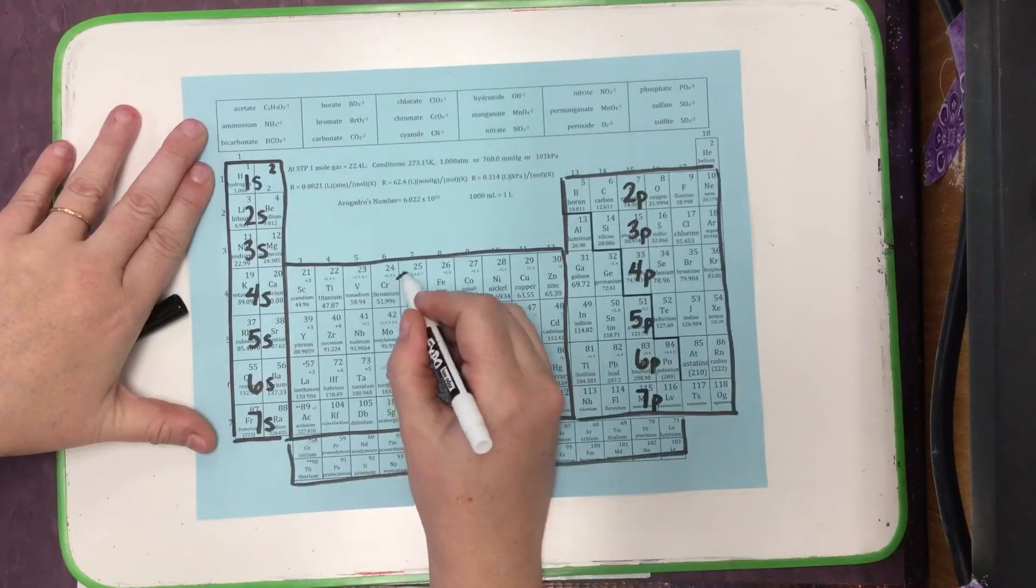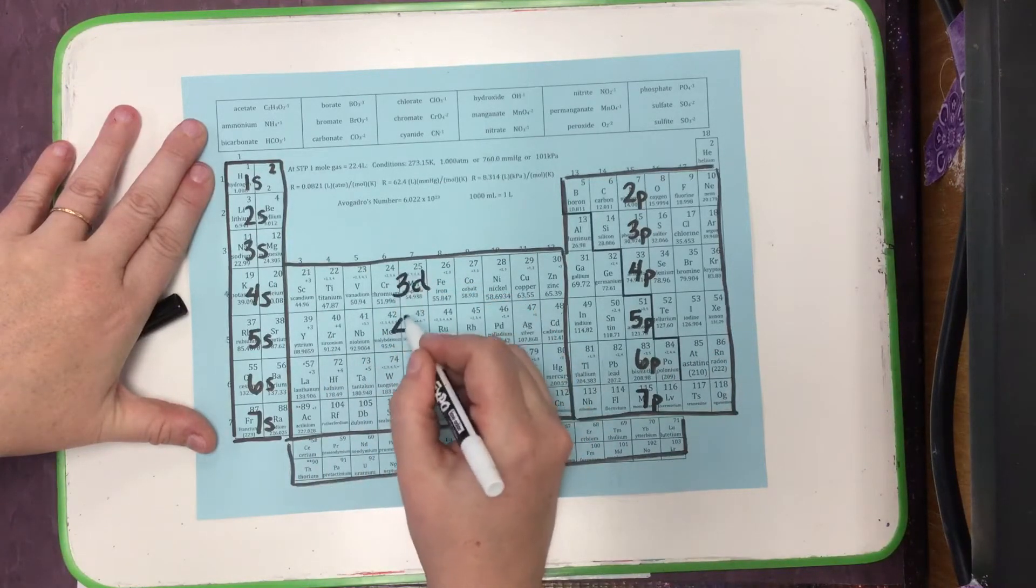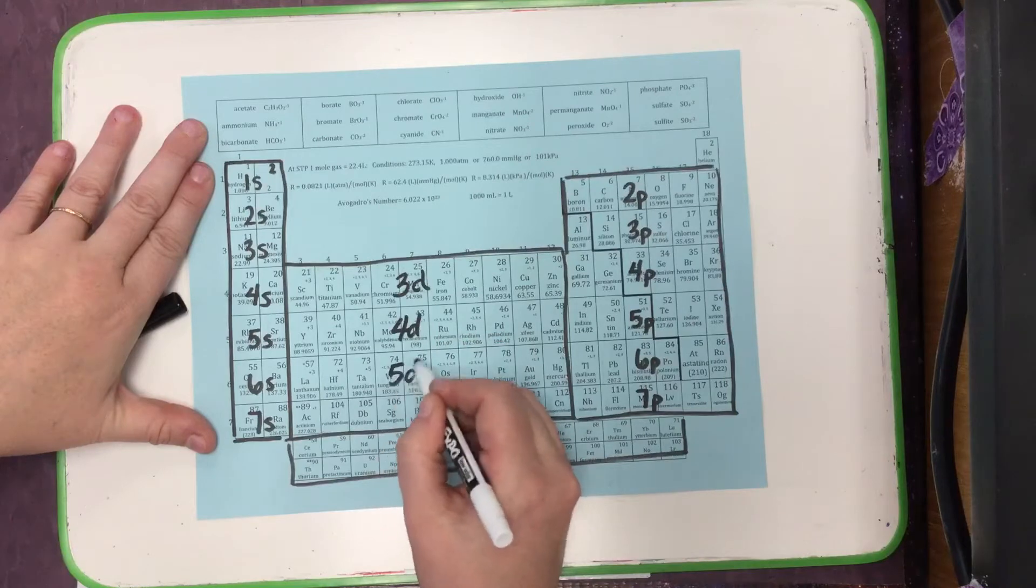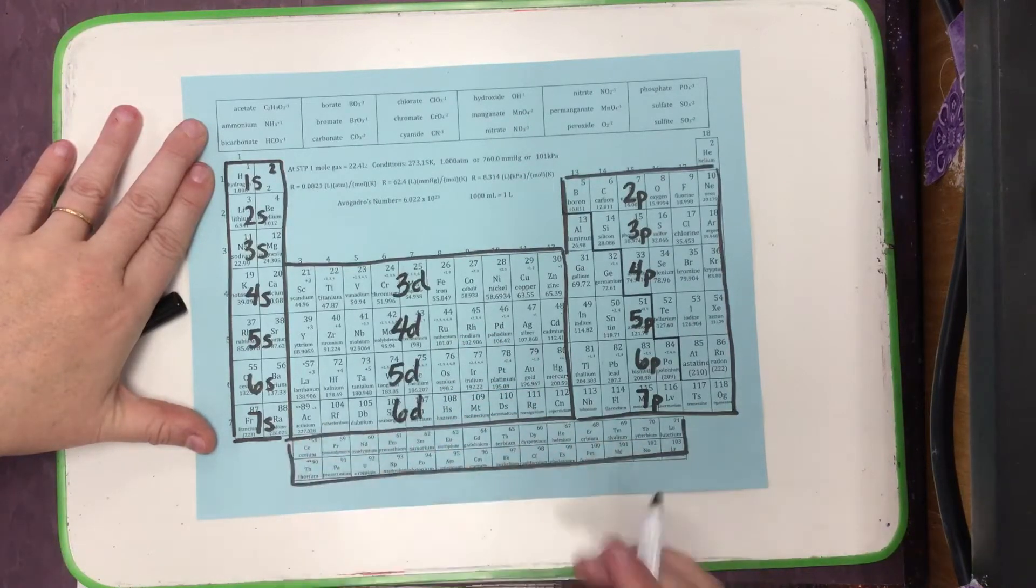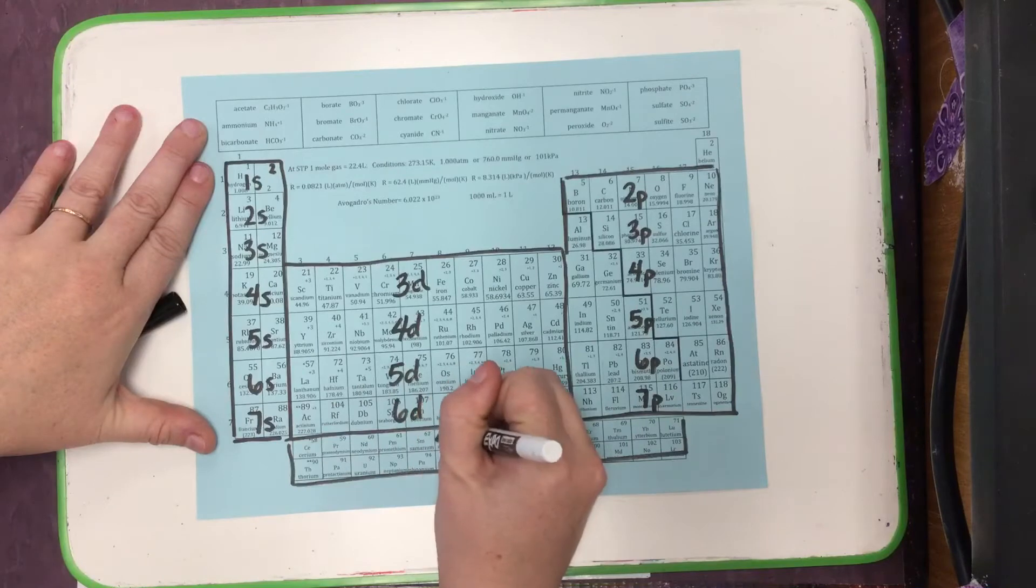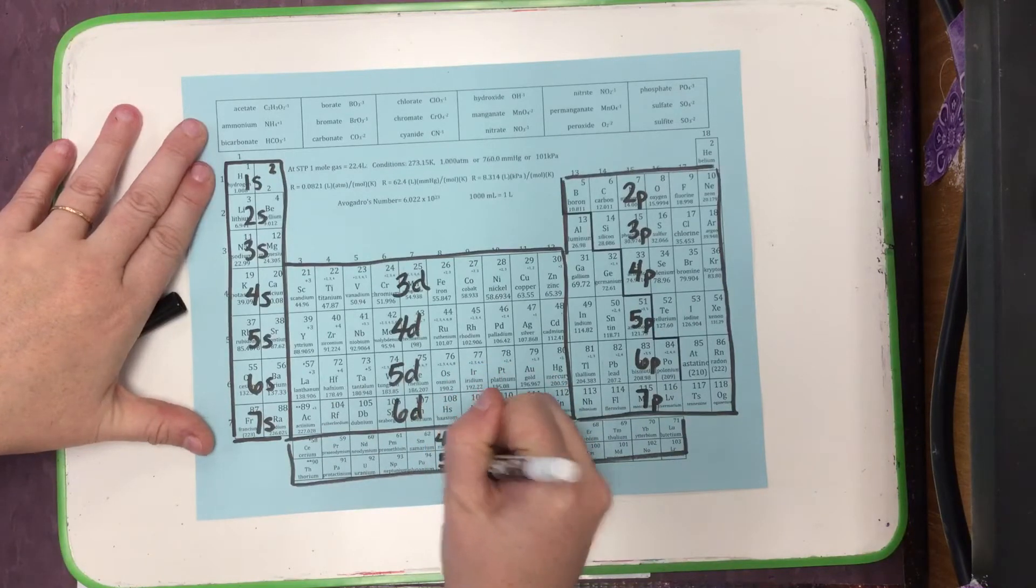We go to the middle, and the middle starts with 3, so that's 3D, 4D, 5D, and 6D. And not that we'll be using them for this class, but we also have our 4F and our 5F on the bottom.